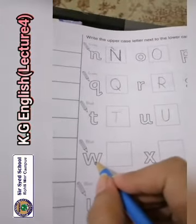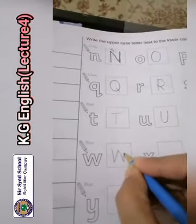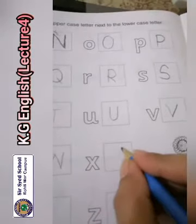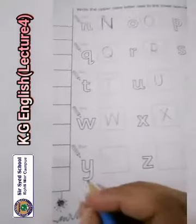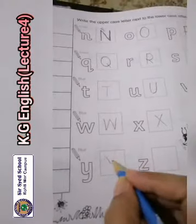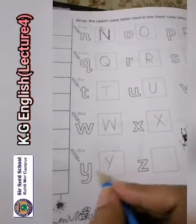Small w, capital W. The sound of W is 'w'. X — small x, capital X. The sound of X is 'x'. The next is Y — small y, capital Y. The sound of Y is 'y'.